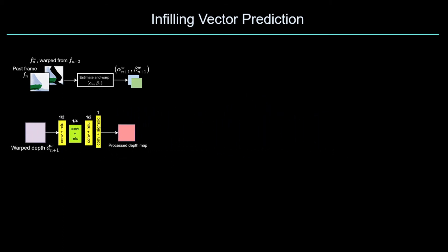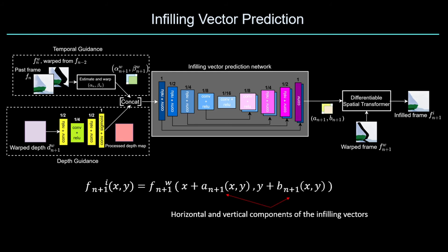With these two guidance as input, our network predicts infilling vectors for the warp frame n plus one, which is used to obtain the infilled frames. We train our network using losses obtained by comparing the infill frame and the true frame n plus one.